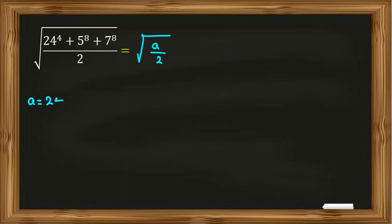And a equals 24 to the 4 plus 5 to the 8 plus 7 to the 8. Now I want to change powers to 4, so I can write 24 to the 4 plus... You know that, for example, x to the m, n equals x to the m to the n by power rule.